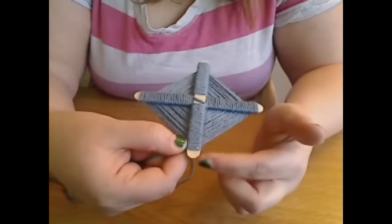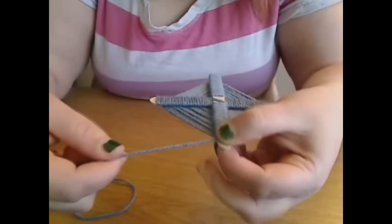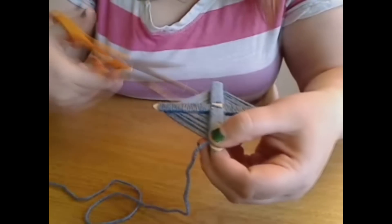Once you're near the end of the popsicle sticks, stop, take some of the yarn, and cut it off, leaving some excess yarn so you can thread it back in.